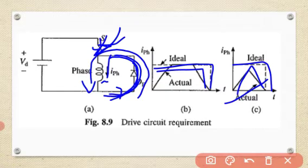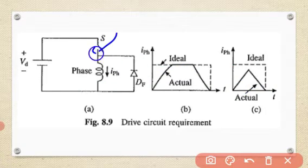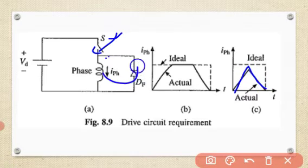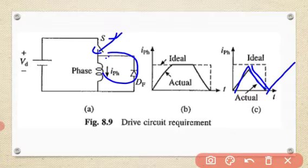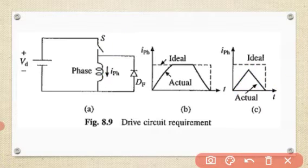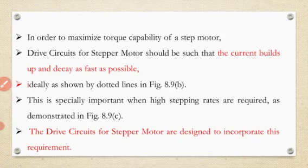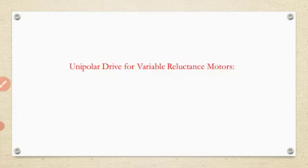When the semiconductor switch is turned on, the current rises. When it is turned off, the current freewheels through the diode and decays to zero. The switch is then turned on again and the cycle repeats. This is the requirement of the drive circuit. Now let us have a discussion about the unipolar drive for a variable reluctance motor.